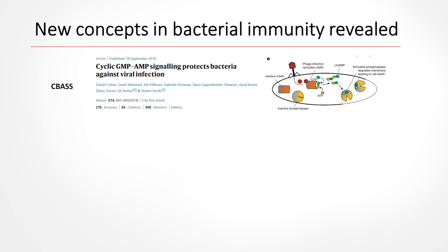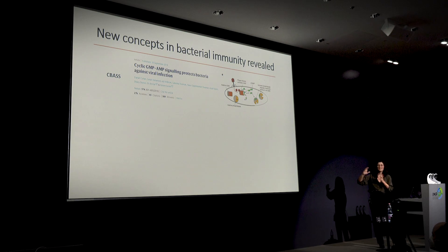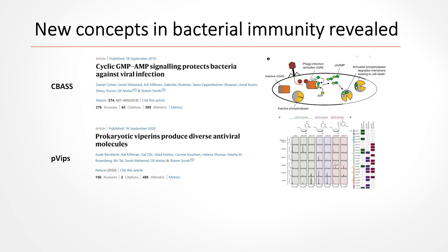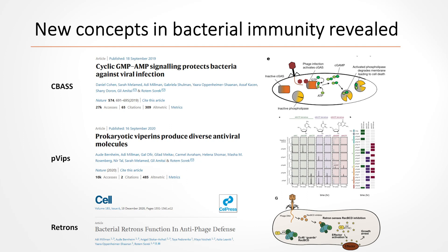The big surprise about this system was that it is actually the evolutionary origin of the human immune pathway, the cGAS-STING pathway, which induces interferon — an interesting connection to eukaryotic immunity. Another example: we found the prokaryotic viperins, which produce diverse antiviral molecules that we think can be harnessed to produce antiviral drugs. And my personal favorite: bacterial retrons.